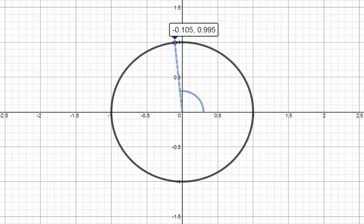Negative 1,0 at 180 degrees. 0, negative 1 at 270 degrees. And then back to 1,0 at 0 or 360 degrees.